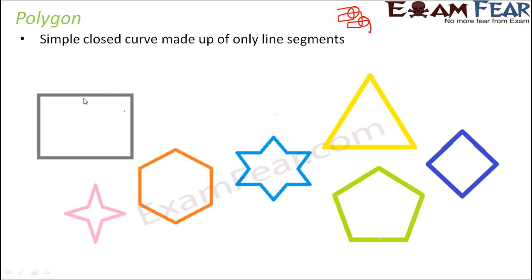So a polygon is a simple closed curve. For example, a rectangle is made up of 4 line segments. Another shape here is made up of 6 line segments. Another has 12 line segments. Others have 3, 5, 4, and 8 line segments respectively. So these are all polygons — made up of only line segments and they are also simple closed curves.